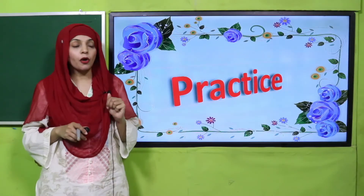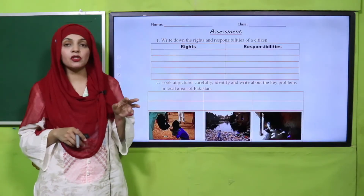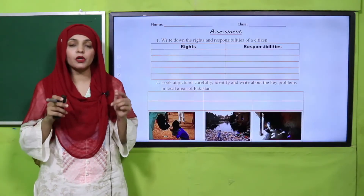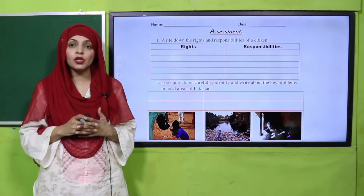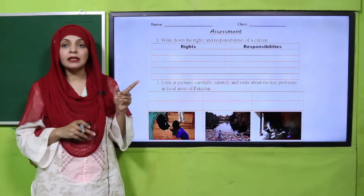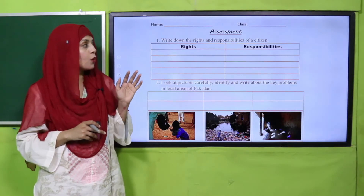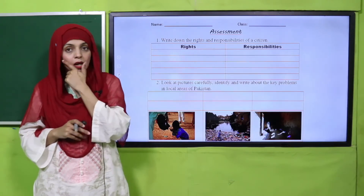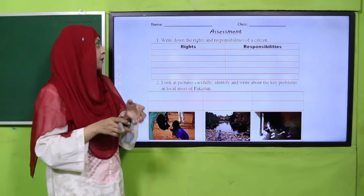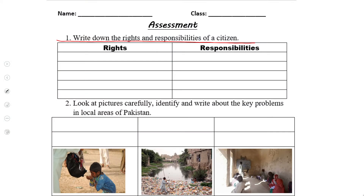Now is the time for practice. You can download the assessment sheet from the description box below this video, or get a printed copy from your teacher. Write down your name and your class, then start the assessment sheet. First, write down the rights and responsibilities of a citizen.